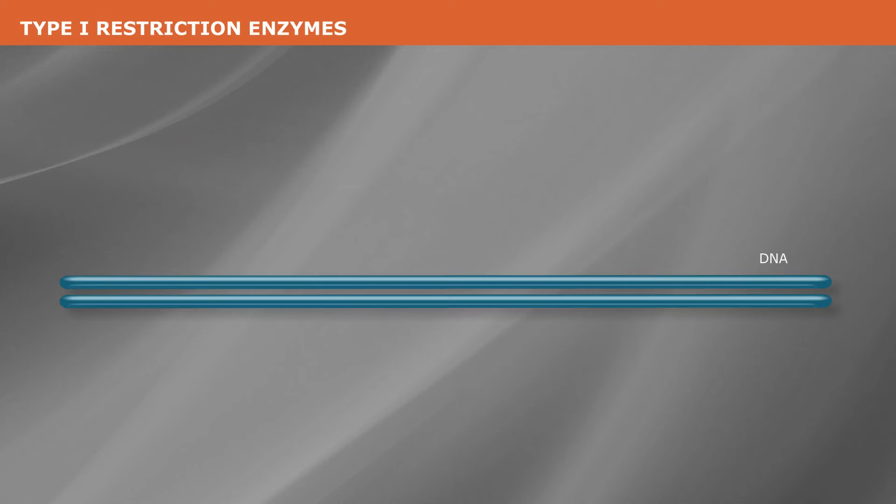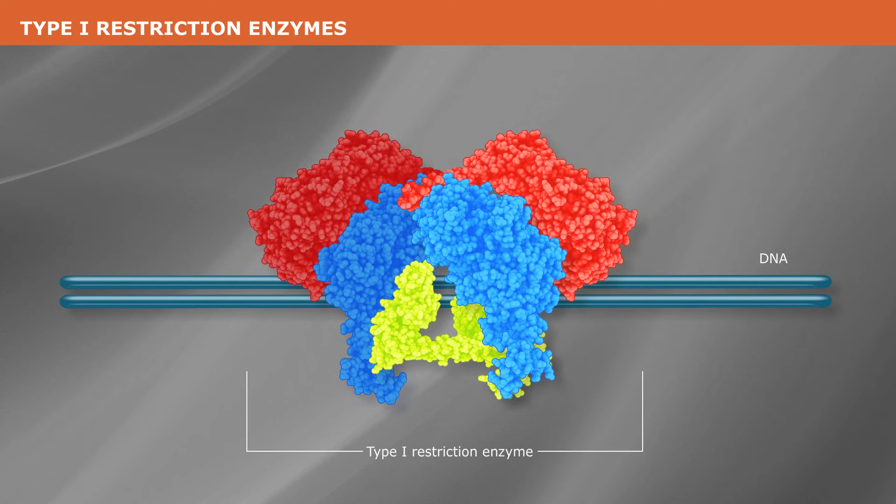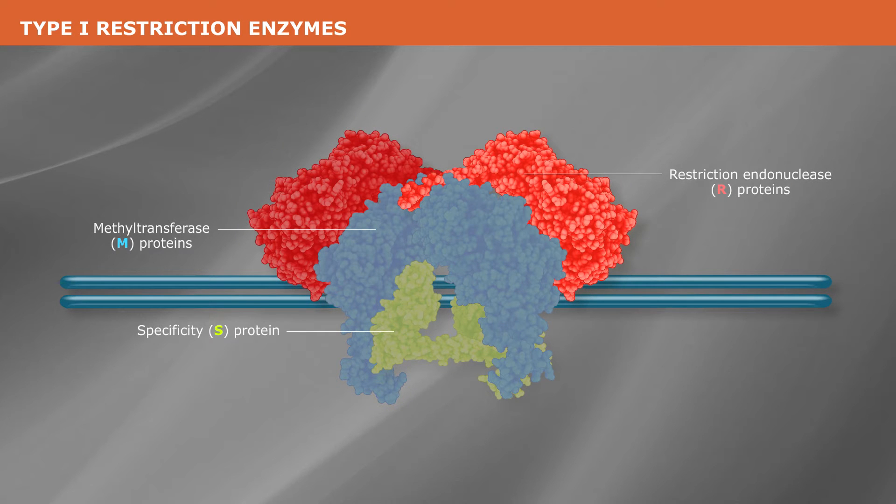Type one restriction enzymes consist of three proteins that function as a single protein complex. The complex typically consists of a specificity protein, two methyltransferase proteins, and two restriction endonuclease proteins.